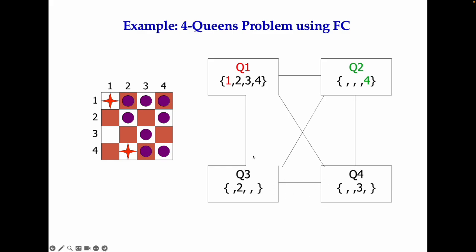With Q1 and Q2 placed, we now try Q3 in row 2. The impact on Q4 is that row 2 is blocked, and another row is blocked diagonally, so we reach a dead end again. We have to backtrack, and since all values of Q2 have been tried, we backtrack all the way to Q1 and choose another value. You can continue this yourself — try a different row for Q1 and apply the same forward-checking propagation to Q2, Q3, and Q4.